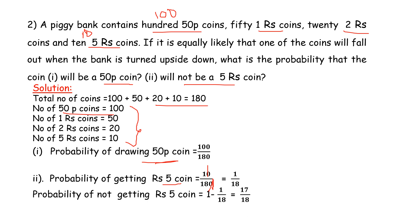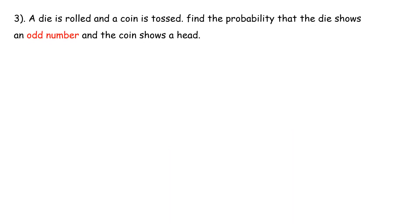The probability of not getting a five-rupee coin: using 1 minus P(E) = 1 minus 1/18 = 17 divided by 18. That is the correct answer.